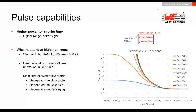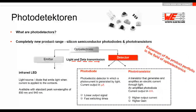Now I'd like to move on to photo detectors. We have an infrared emitter producing light that is not perceivable by the human eye at 850 or 940 nanometers — so we still need a way to detect this light and get back the signal we are emitting. There are two different options: we can have a detector in the form of a photo diode or a photo transistor.